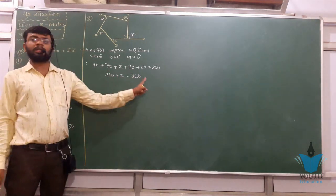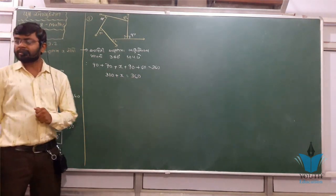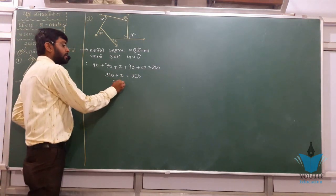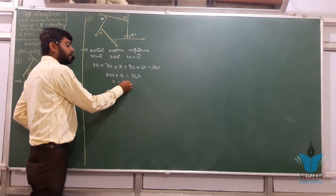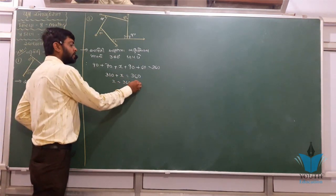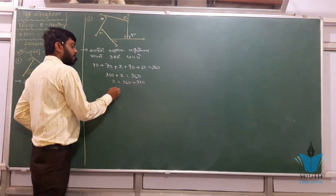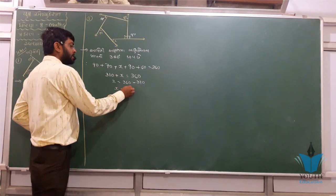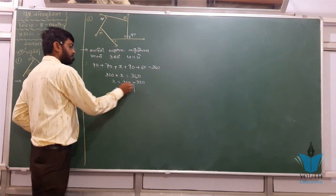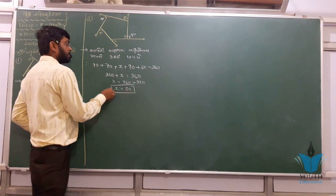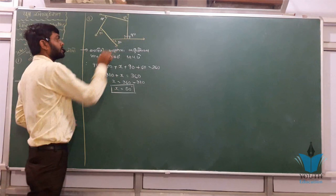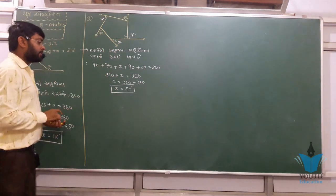310 is equal to 4. So, x is equal to 310 minus 310. x is equal to 310. Question number 2.